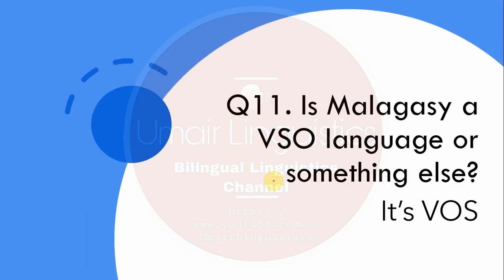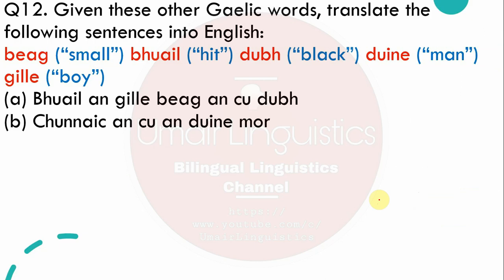Question 11: Is Malagasy, spoken in Madagascar, a VSO language or something else? It is actually a VOS language. There are many languages in which the verb comes at the beginning, and Malagasy is one example of this, as also seen in the table referenced earlier.